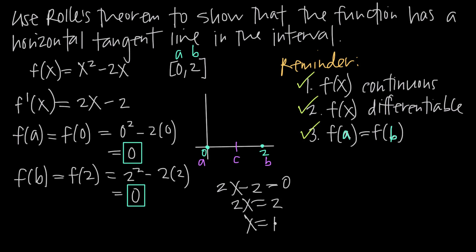x = 1 is inside our interval from 0 to 2. Rolle's theorem told us that because f(x) was continuous in the interval, differentiable in the interval, and f(a) = f(b), there was a value c where the derivative — the slope of the tangent line — would be 0 and the tangent line would be horizontal. So at x = 1, the function f(x) = x² - 2x has a horizontal tangent line.